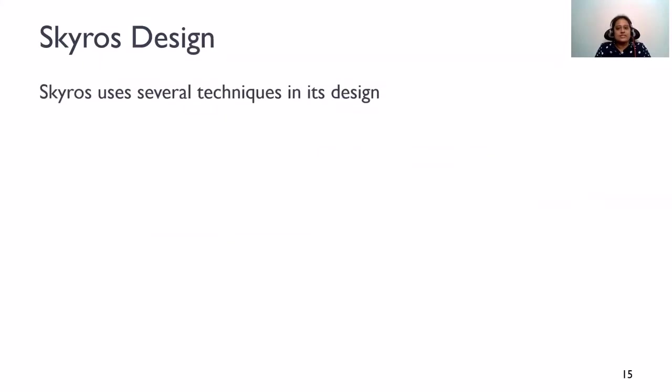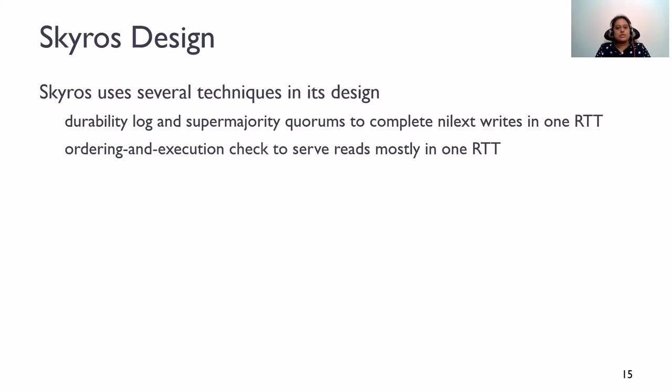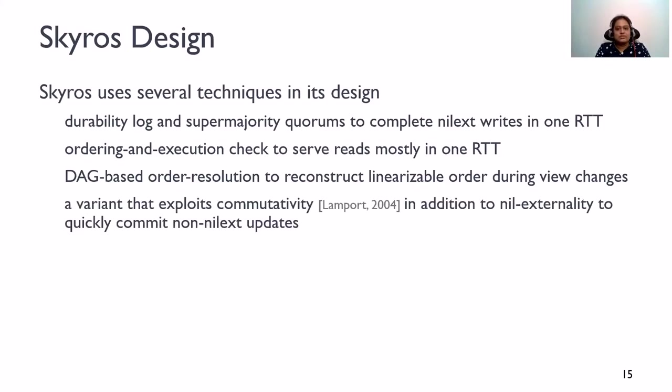The previous slide just showed the overview of the protocol. In the paper, we discuss several techniques in Skyros's design that ensure both correctness and performance. Skyros, for instance, requires a durability log and supermajority quorums to complete nilext writes in one round trip. It uses an ordering and execution check to serve reads in one round trip. It has techniques to ensure correctness during view changes. We also build a variant of Skyros that exploits commutativity in addition to nil externality. I encourage you to read the paper for the details.